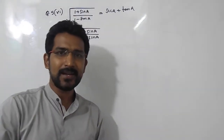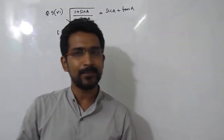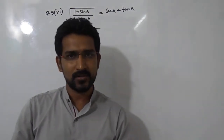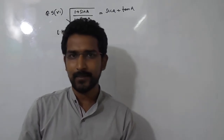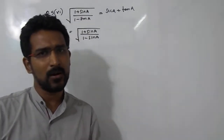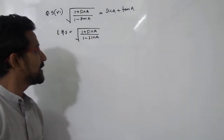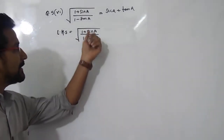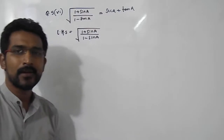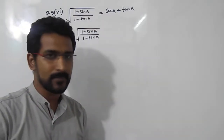So whenever you get this type of question — that is root of (1 plus sin A) divided by (1 minus sin A), or (1 plus cos A) divided by (1 minus cos A), or in terms of sec or cosec — what you have to do here is multiply the denominator and the numerator by the conjugate value of the denominator.